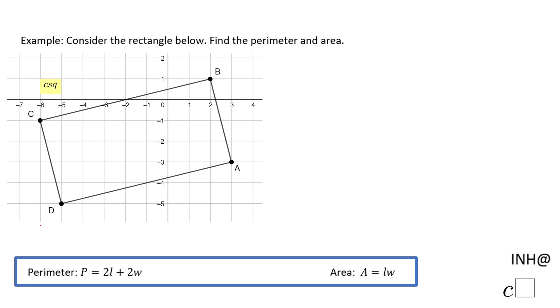For the perimeter and for the area, let's start with the perimeter, which is two lengths plus two widths. Now it doesn't really matter which I consider the length and which the width, but let's say this is the length and this one is the width.